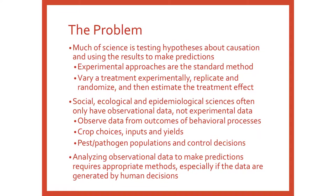Observational data are often the outcomes of behavioral processes. Think of what you see at the landscape: crop choices, inputs chosen, and yields generated — fertilizer and corn yields, pest management practices. Think of what you see at a landscape mosaic: you go out and measure insect populations in the field or pathogen intensity, and there are control decisions happening simultaneously. Obviously the population is affected by control decisions like insecticide applications, but insecticide applications are also affected by pest populations. You've got observational data, and if you want to make predictions with them, you've got to have appropriate methods, especially if the data are generated by human decisions.